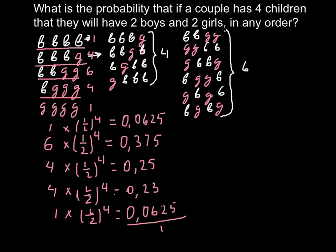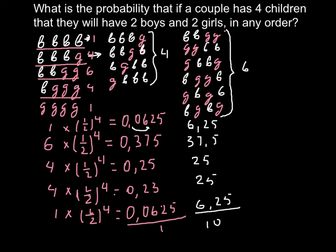If we add all these numbers we get one. We can also convert all these numbers to percentages — just move the decimal point two places to the right. So we get 6.25%, then 25%, then 37.5%, then 25%, and 6.25% again. If we add all these answers we get 100%, because we've covered every possible outcome.